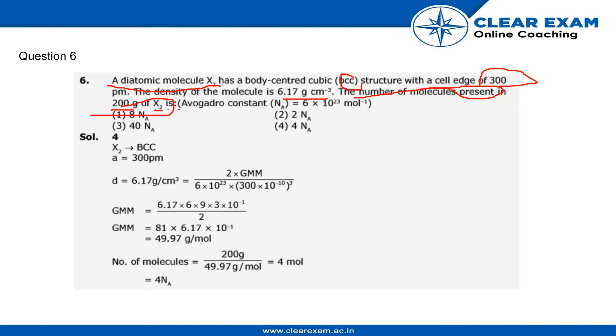The options given are 8 Avogadro number, 2 times Avogadro number, 40 times, or 4 times Avogadro number. When we calculate, the X₂ is in BCC structure and the cell edge given is 300 picometers. The density is 6.17, so we can apply the density formula.